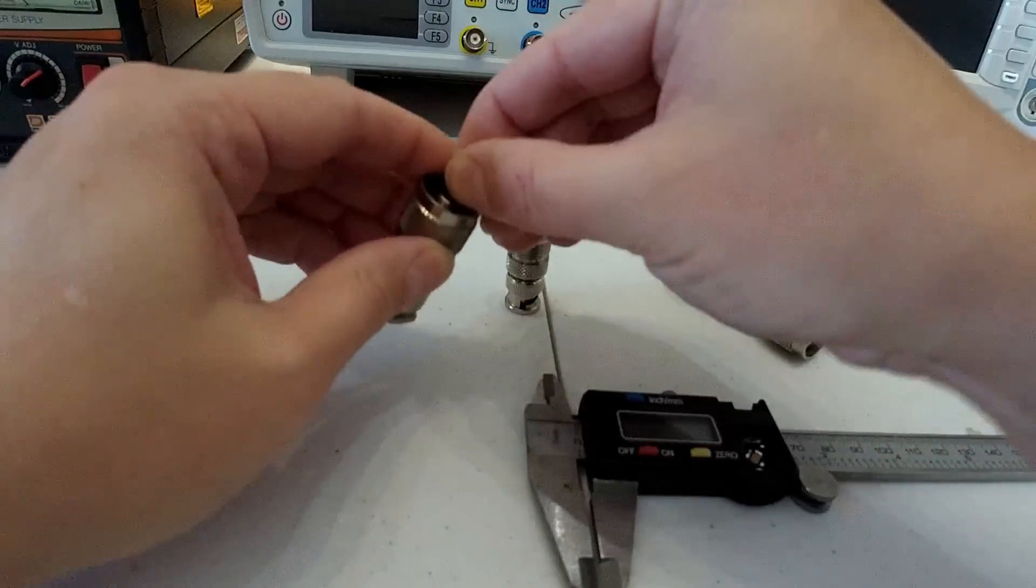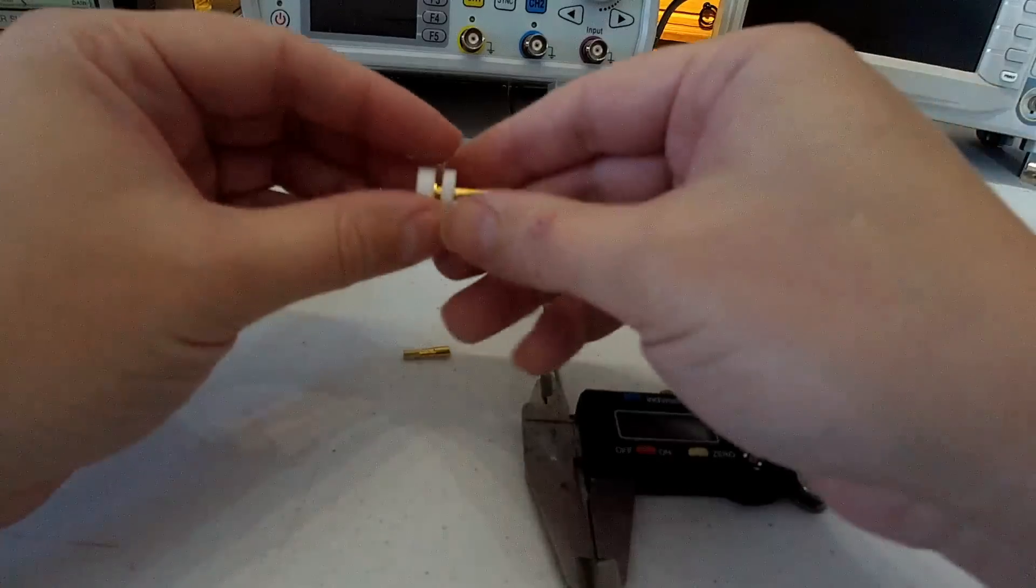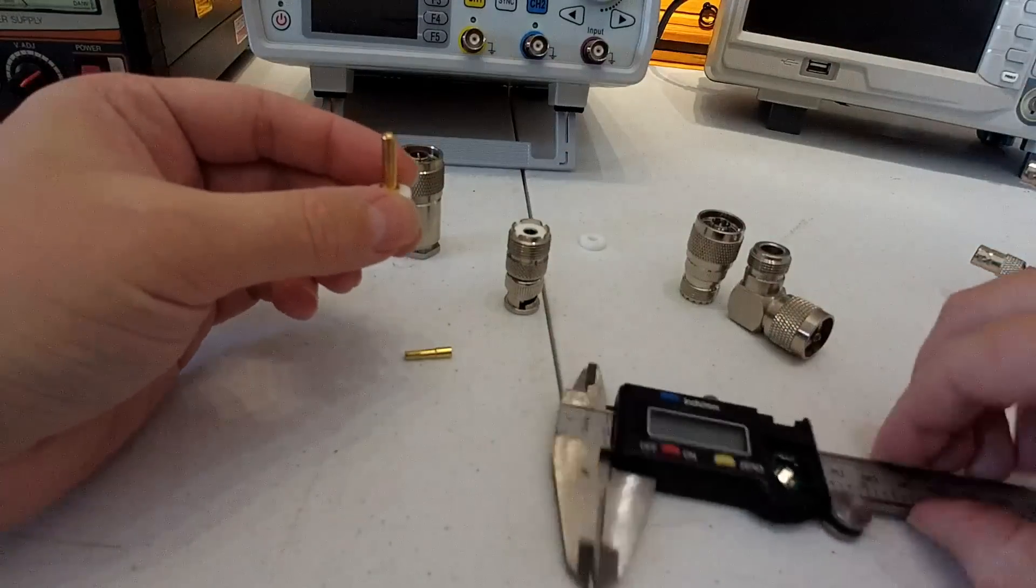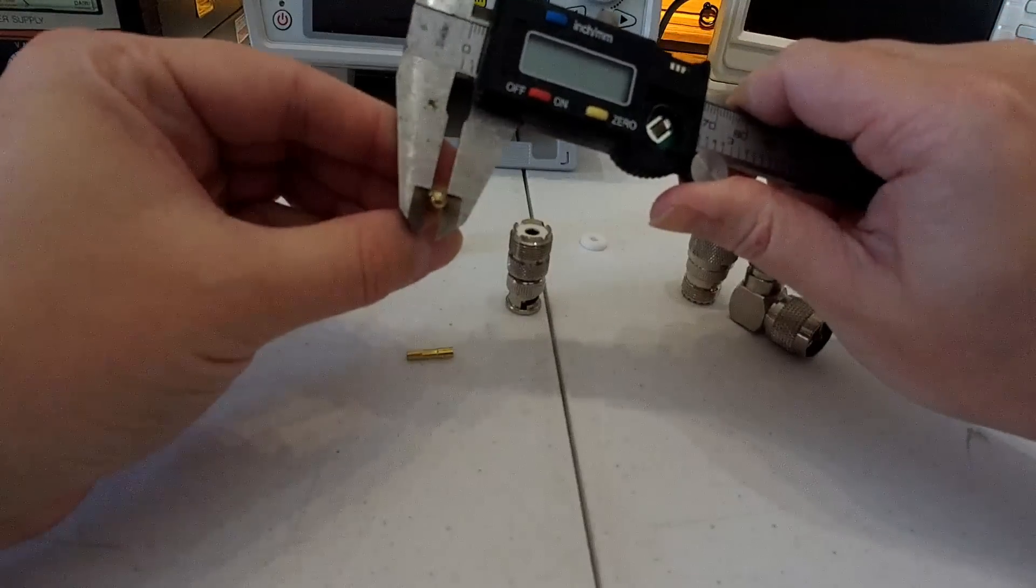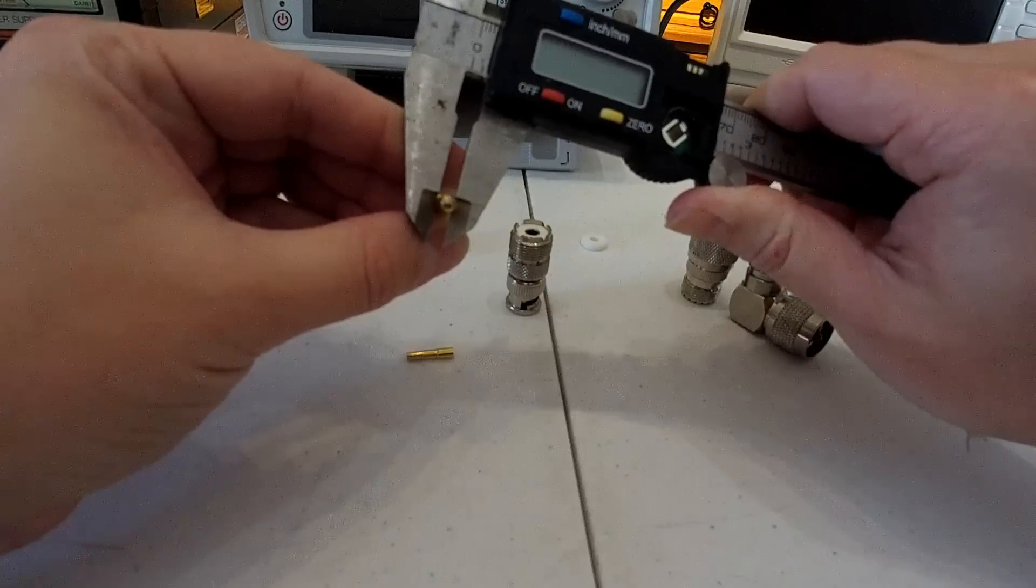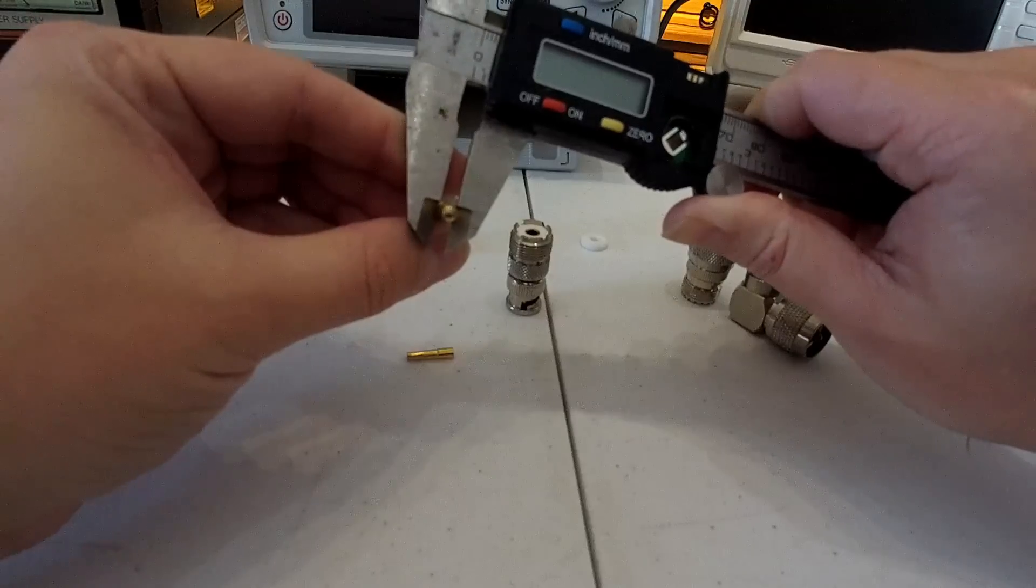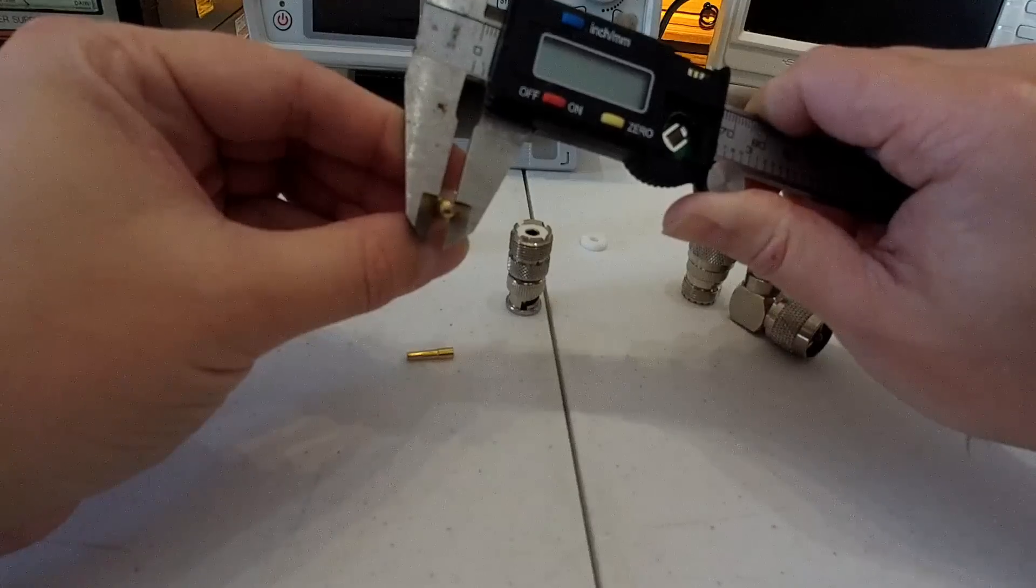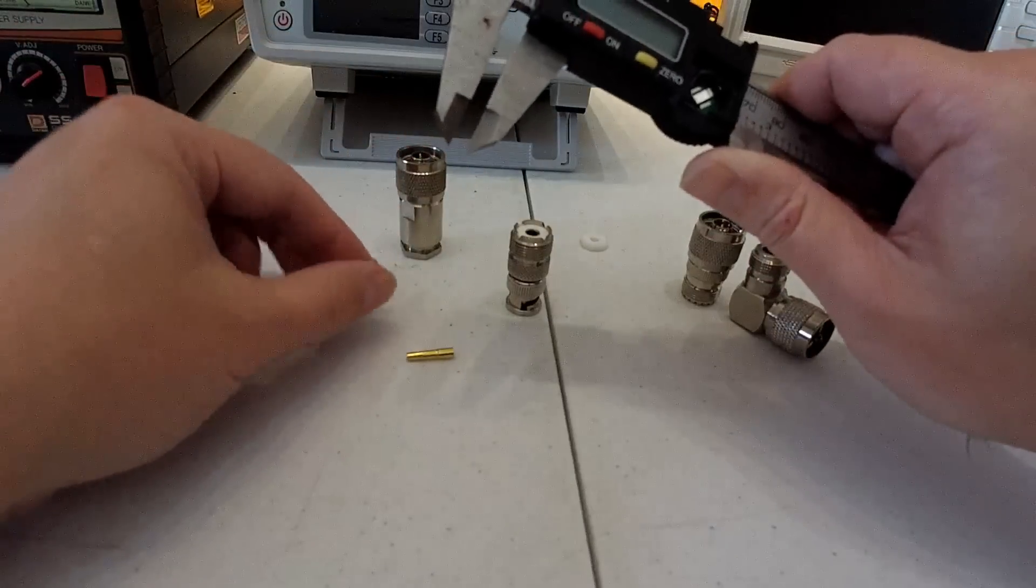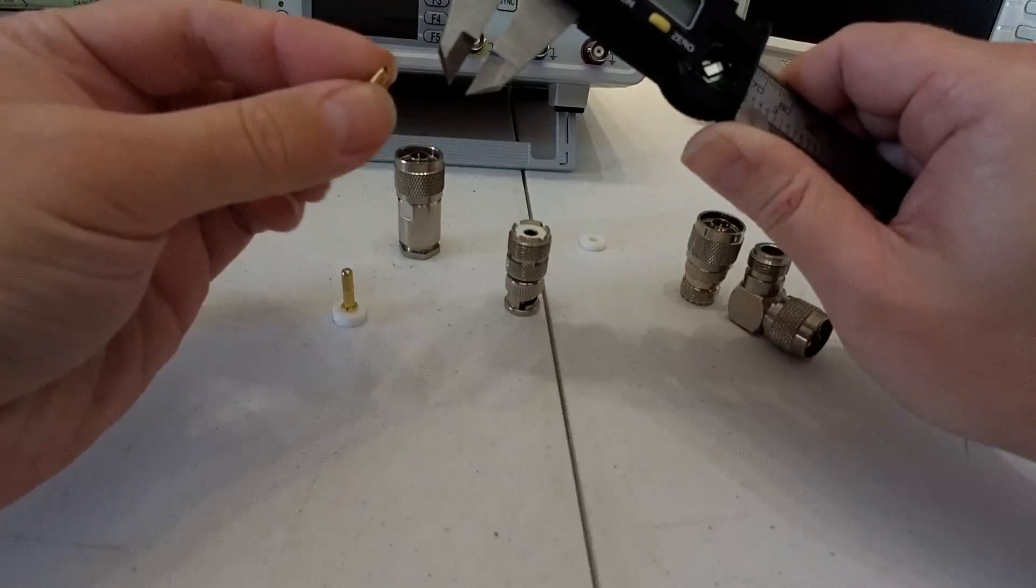Secondly, they have higher current handling abilities. In a connector, the current handling is essentially defined by the diameter of the center pin. In the case of the PL259, the center pin is roughly - let's get this right - pretty much four millimeters in diameter. So you've got a four millimeter center pin there.